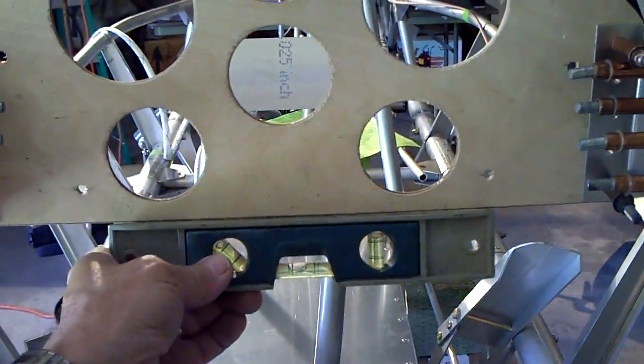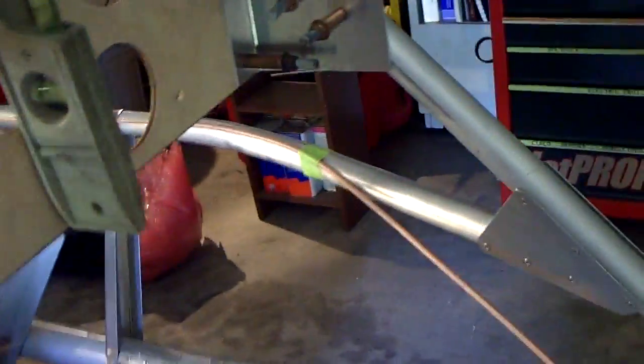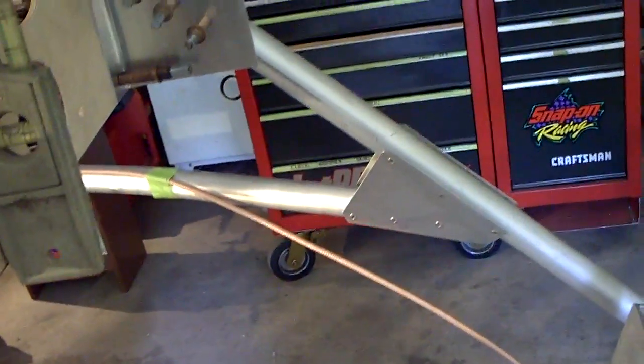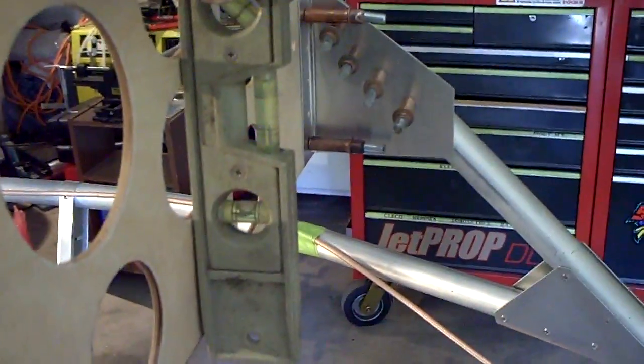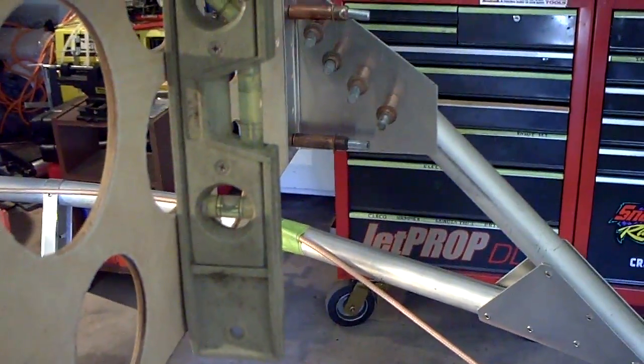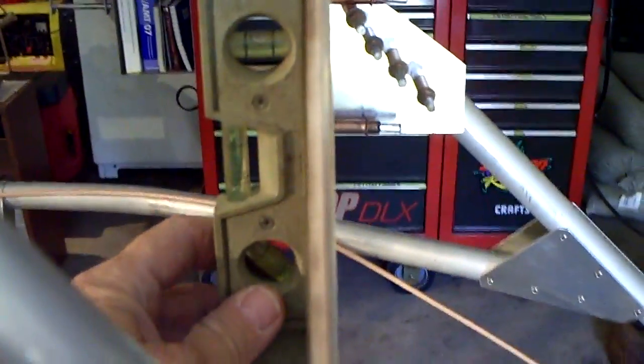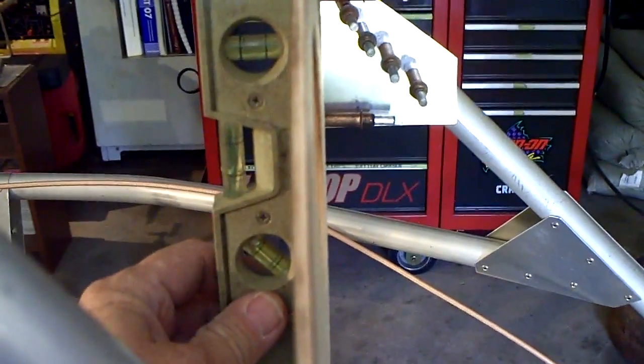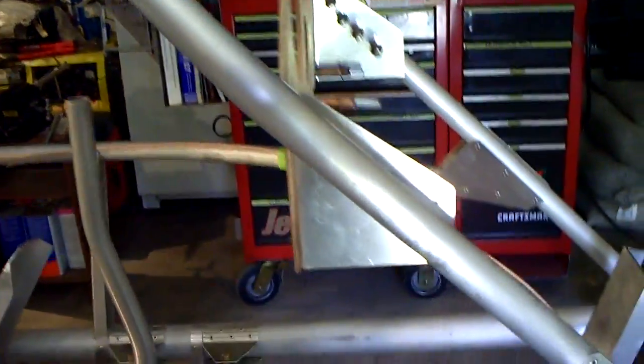And then I also made certain that it was level in relationship to the pitch axis of the airplane. So my panel will be relatively level in relationship to the pitch axis of the airplane.